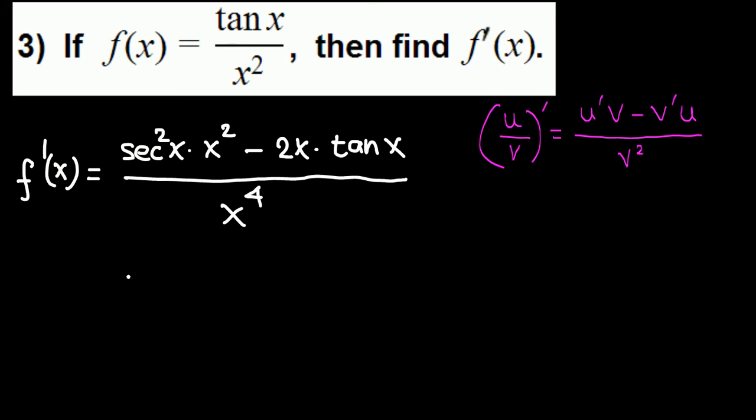Now this is it, but we can simplify. We have x squared and x. We can factor x from these two terms and cancel with one x because we have four x on the bottom.